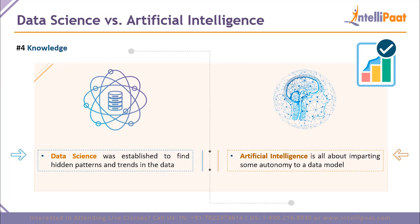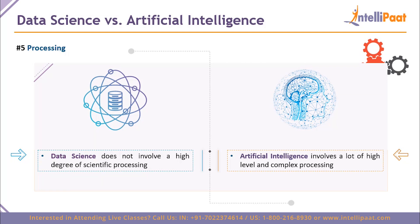Point four is knowledge. Data science was established to find hidden patterns and trends in data — to make more sense of data and make it a friendlier entity. Artificial intelligence, by contrast, aims to ensure that whatever data we're dealing with can be autonomously handled, removing human dependency and giving the machine a deeper understanding of data so it can work on its own.